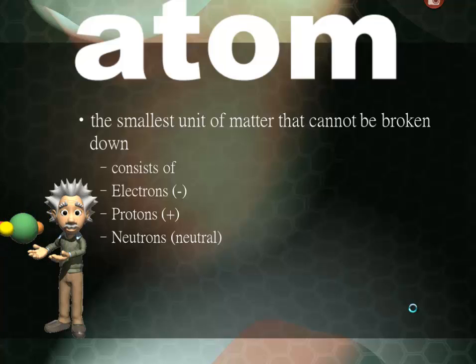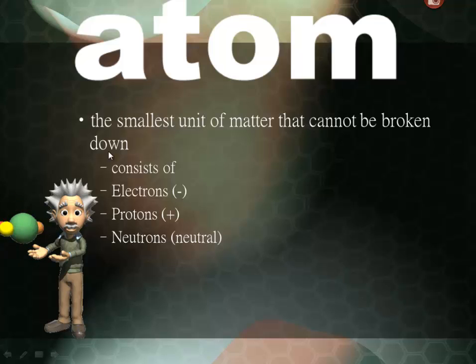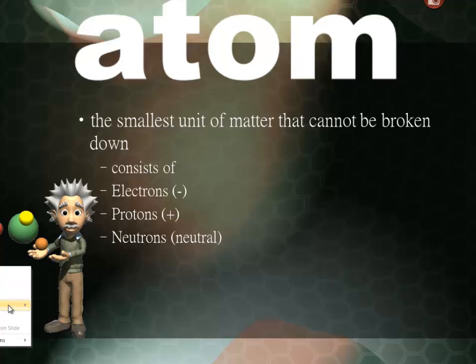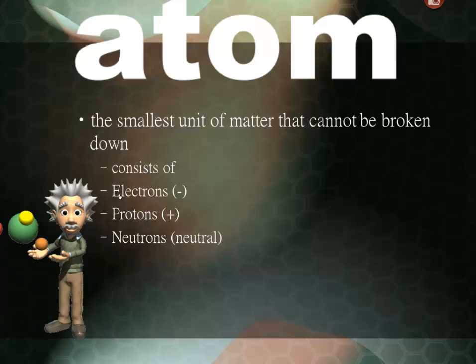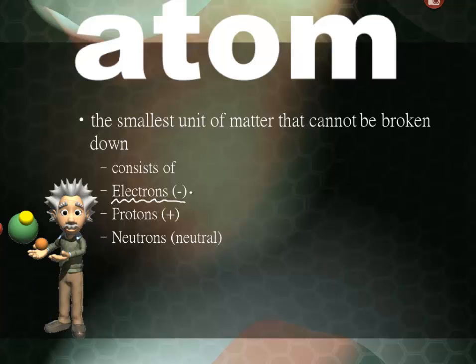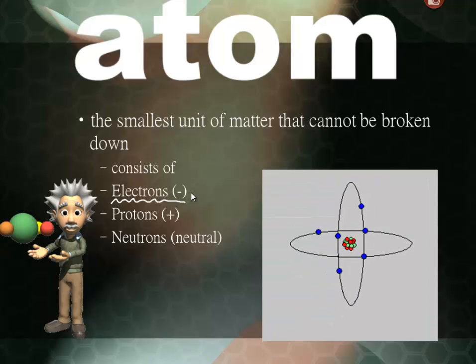Atoms consist of electrons, protons, and neutrons. Electrons are negative, and understanding how electrons get passed from one place to another is very important in biology.